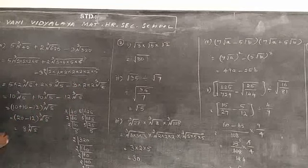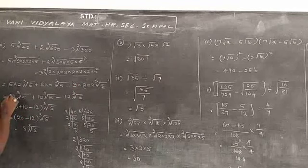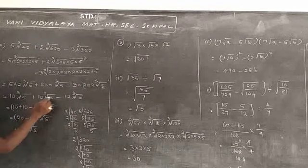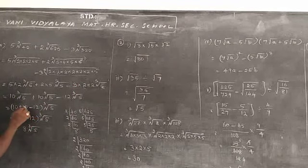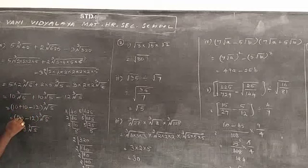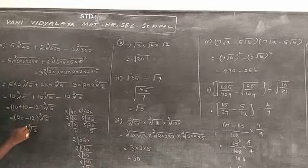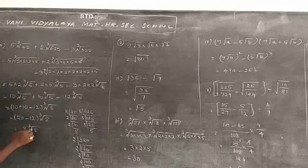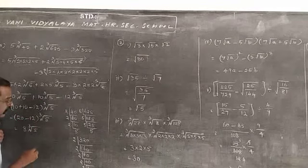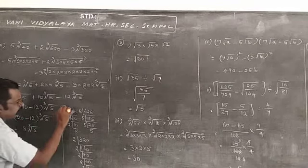All the terms are in cube root of 5, so factor out cube root of 5 outside. Inside the bracket: 10 plus 10 minus 12. That gives cube root of 5 times 8, so the answer is 8 cube root of 5.